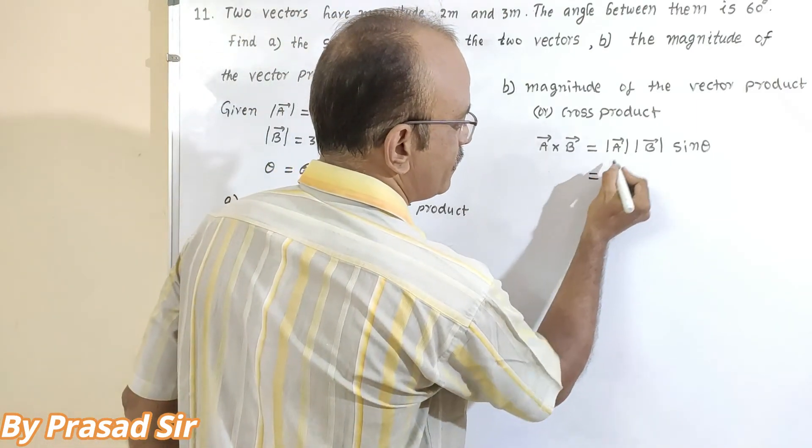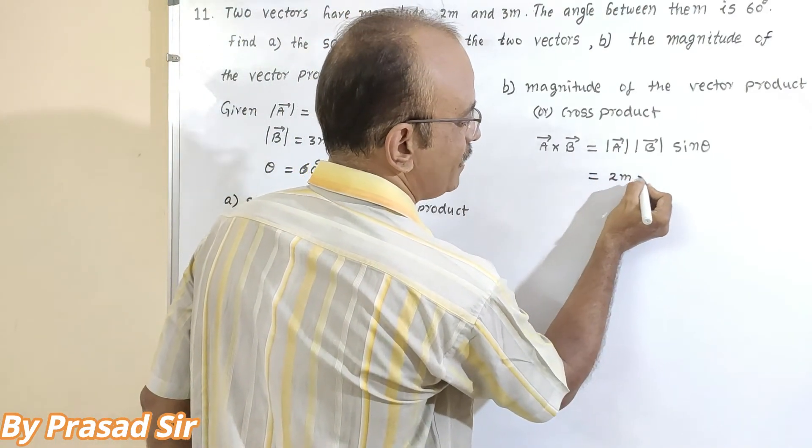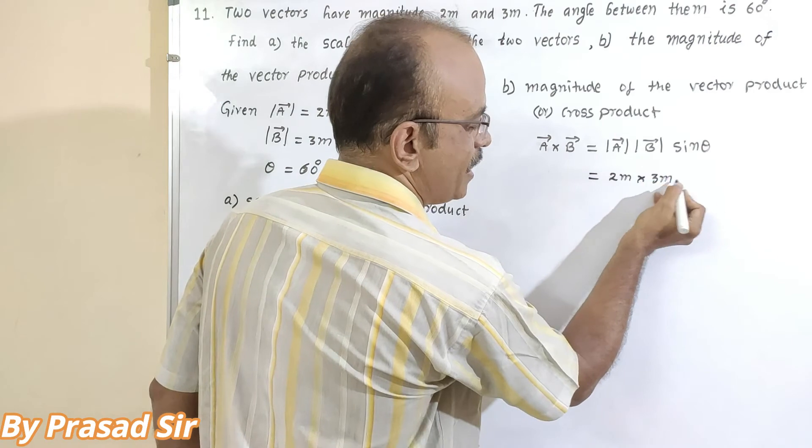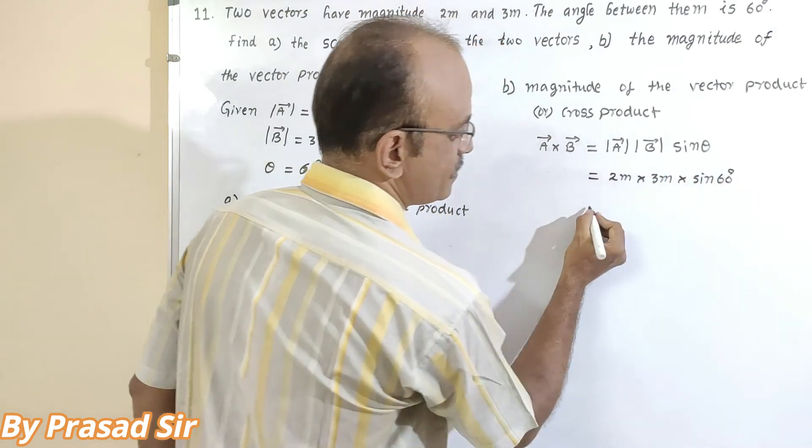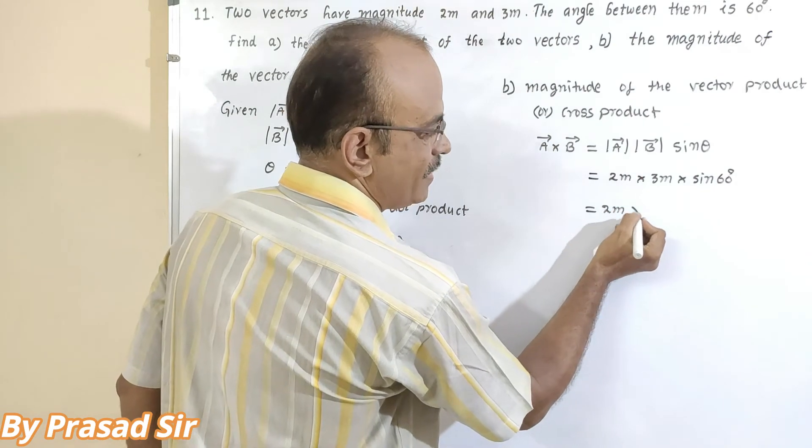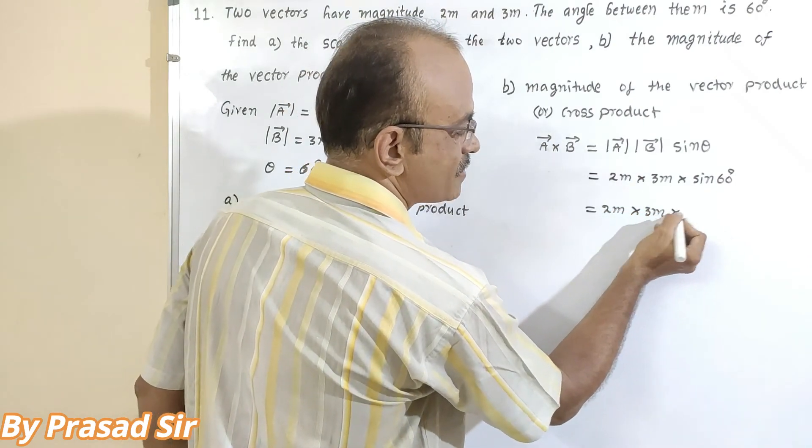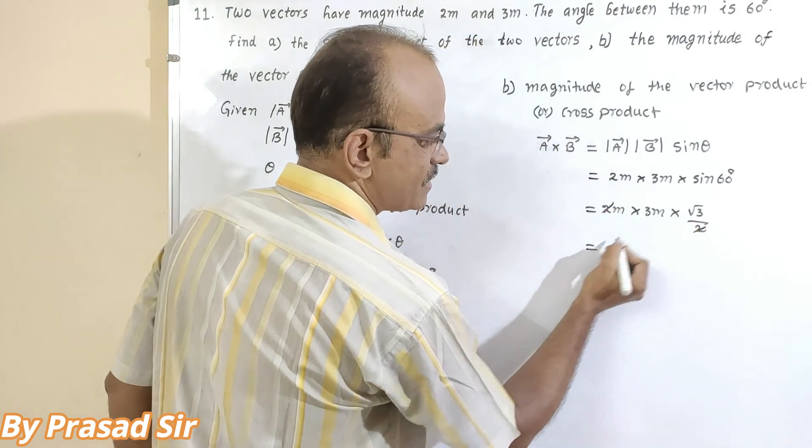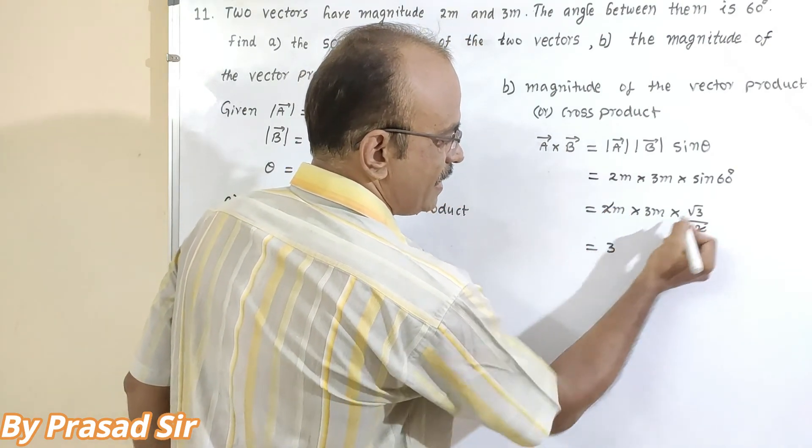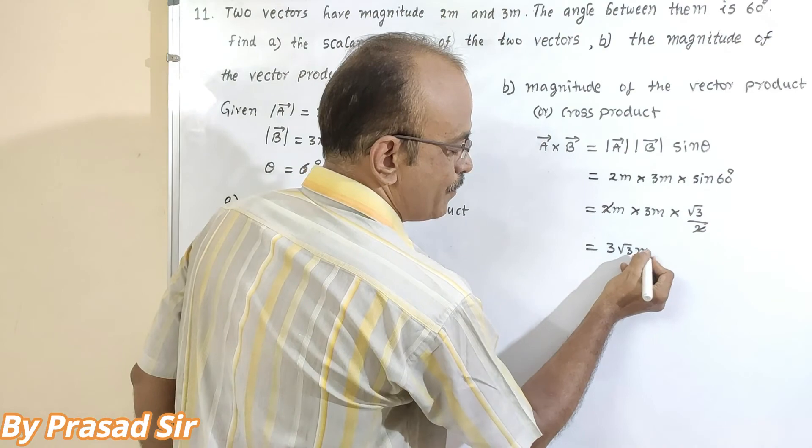That is 2 meters and 3 meters and sin 60 degrees. So here 2 meters and 3 meters, sin 60 value root 3 by 2. 2 gets canceled. Here 3 and here root 3 meter square.